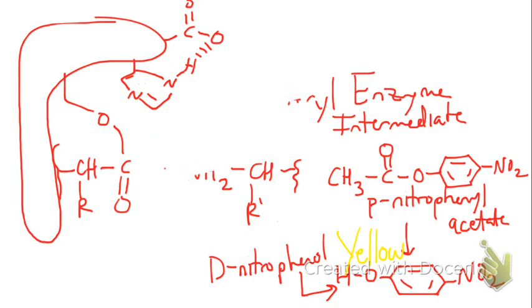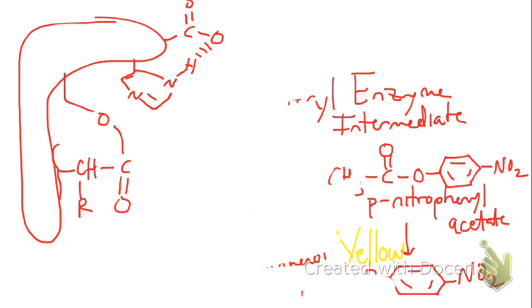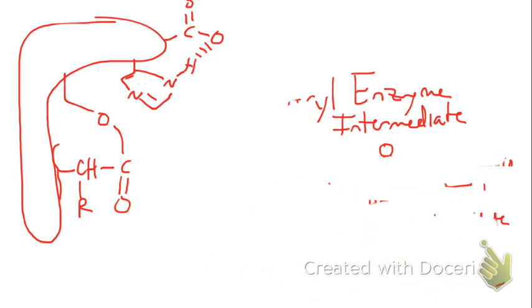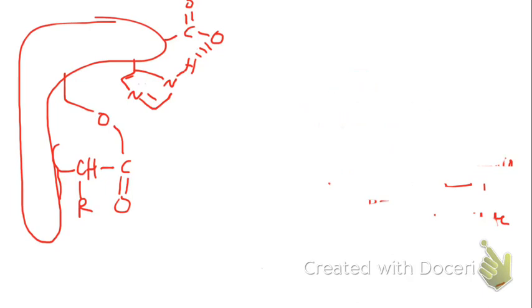We have this. Let's go ahead and erase all of this because we got rid of the rest of the peptide, we know how it acts now. So we have this intermediate, the acyl intermediate.